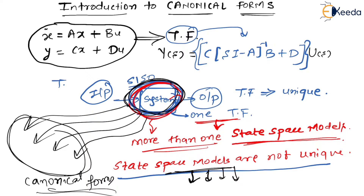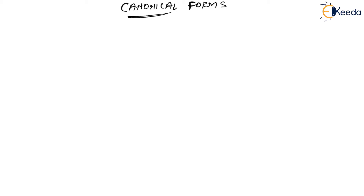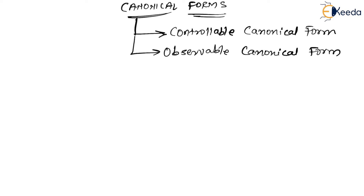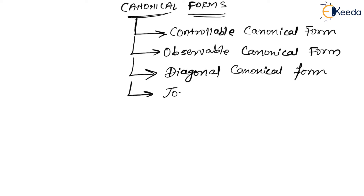Since state space models are not unique, we represent them in different forms, and those are called canonical forms. So let us understand what the different forms are. Canonical forms — there are four types. The first one is the controllable canonical form, the second is the observable canonical form, the third is the diagonal canonical form, and the last one is Jordan's canonical form.